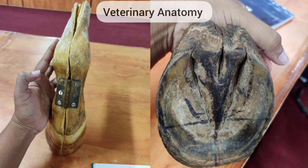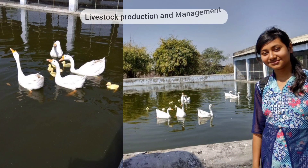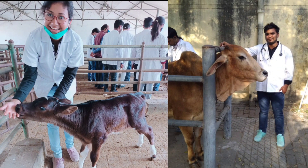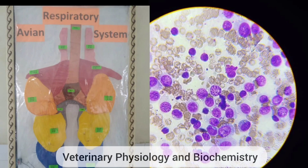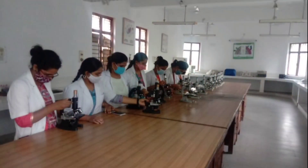In first year we have 3 subjects: Veterinary Anatomy, Livestock Products and Management (LPM), and Veterinary Physiology and Biochemistry. In Veterinary Anatomy we study the anatomical, histological and embryological aspects of animals. In LPM we study different breeds of cattle, buffalo, goat, sheep, dog, cat, swine, horse, mule, donkey, etc., along with their management, breeding, feeding, and reproductive aspects. In Veterinary Physiology and Biochemistry we study the physiological and functional aspects of the animal body. Several experiments are also conducted in all three subjects.